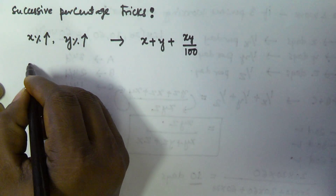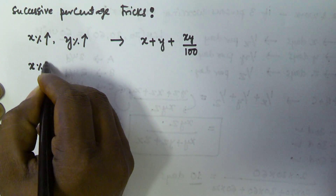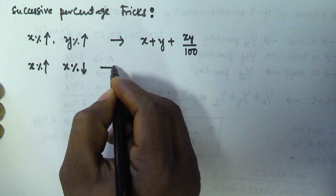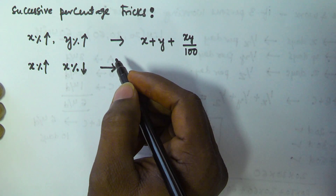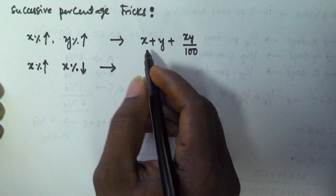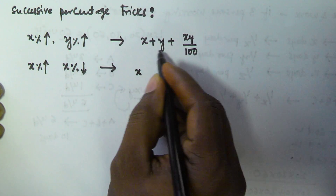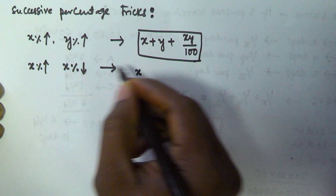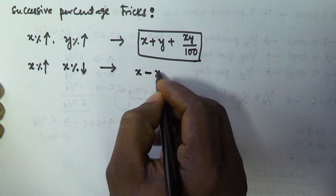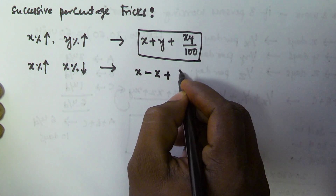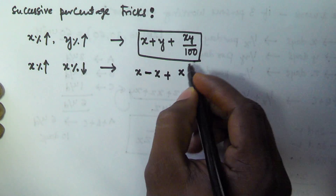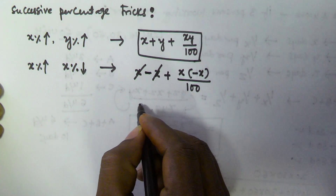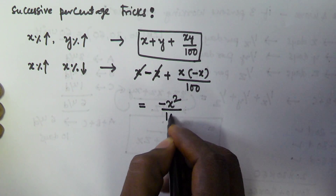So let us assume a value is increased by x percentage and then decreased by x percentage again. The resultant percentage change is found by substituting into the formula. x percentage increase means x as-is, and x percentage decrease means we use negative symbol, so minus x. Substituting: x plus minus x plus x times minus x by 100, so the x terms cancel and this becomes minus x squared by 100.